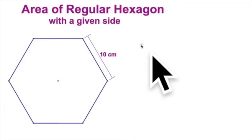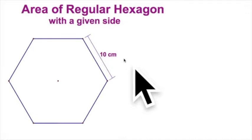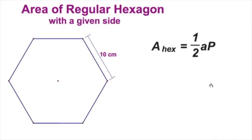Here we're going to find the area of a regular hexagon with a given side. In our example, we'll use something easy, 10 centimeters. You've learned in this section that the area of any regular polygon is one half times the apothem times the perimeter.